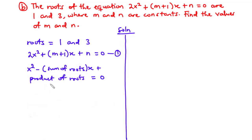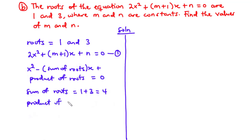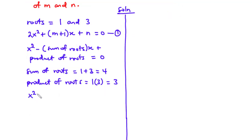We need to find the sum and product of the roots. The sum of roots is 1 plus 3, which equals 4. The product of roots is 1 times 3, which equals 3. Putting these into the formula gives: x squared minus 4x plus 3 equals 0.